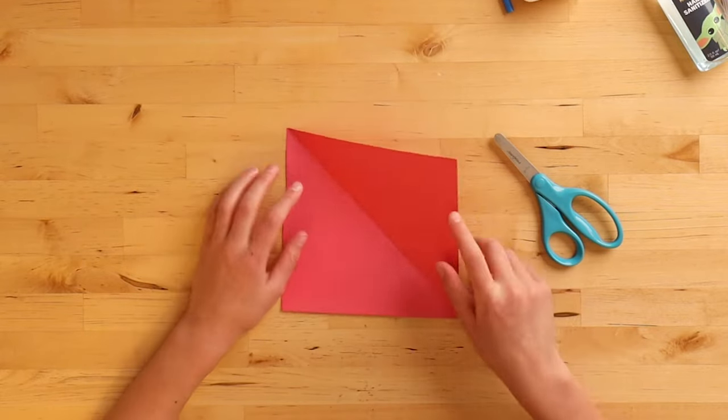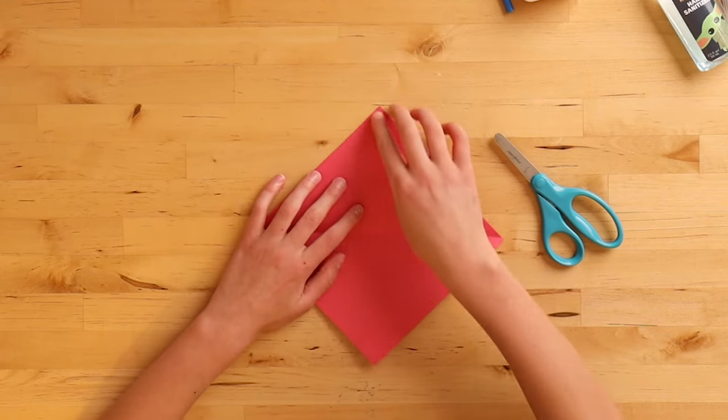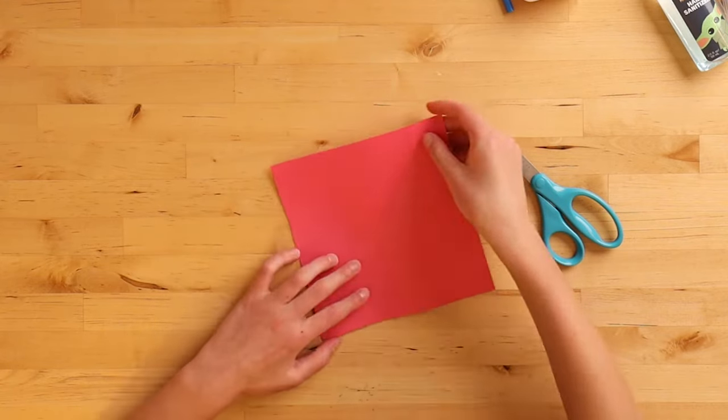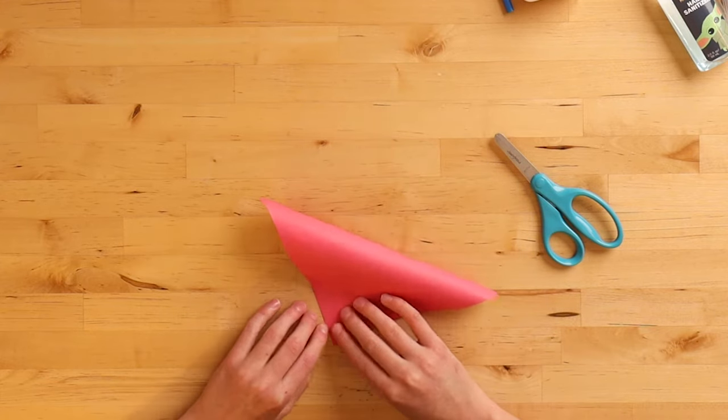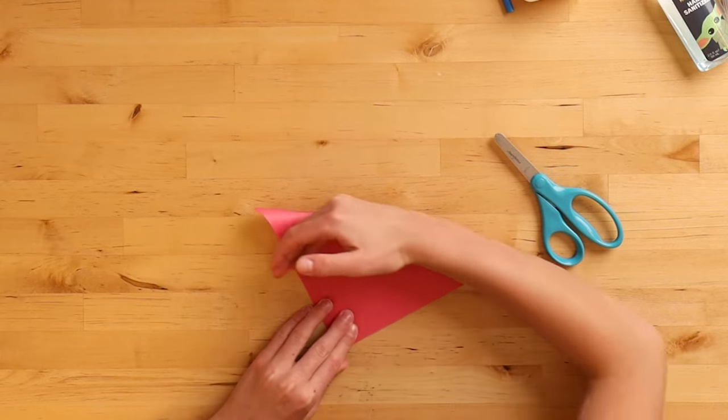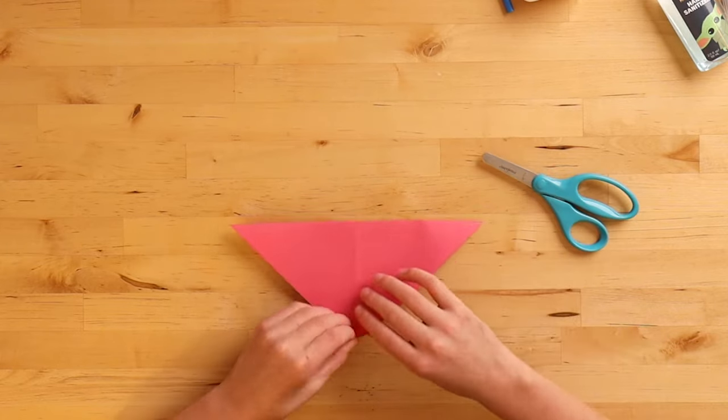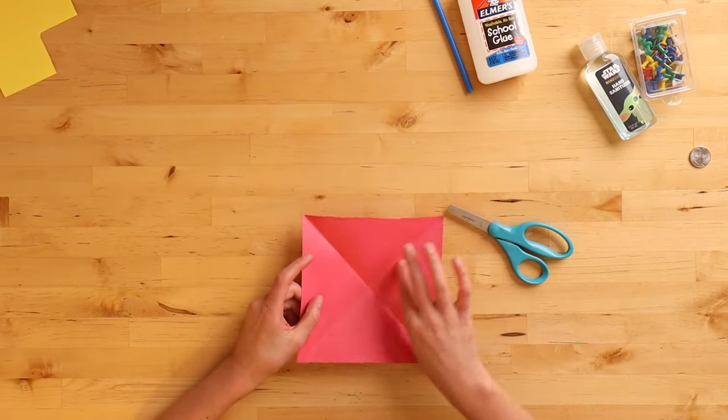When you unfold it, you see that it's a perfect square and that there's a crease running down the middle. So you need to also make one in the other direction. Now when you open it, you can see that you have your two creases.